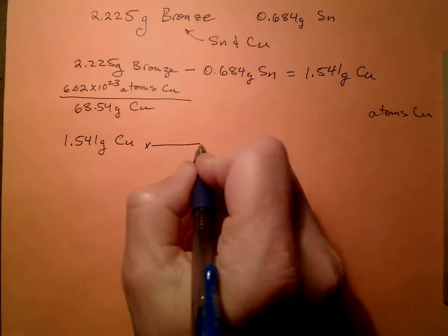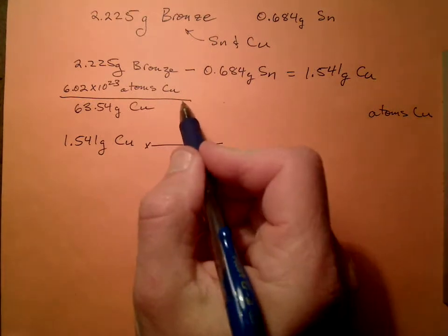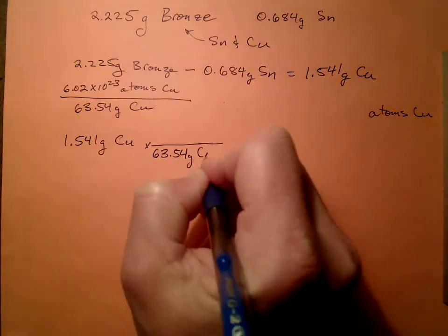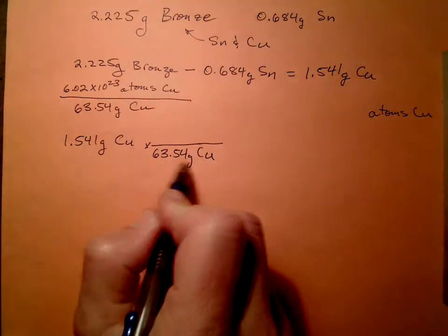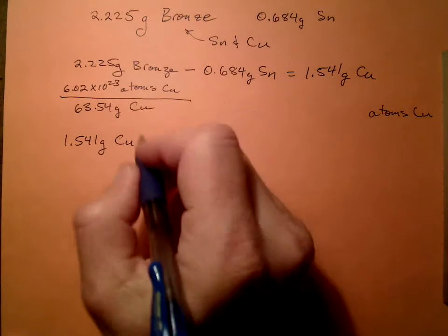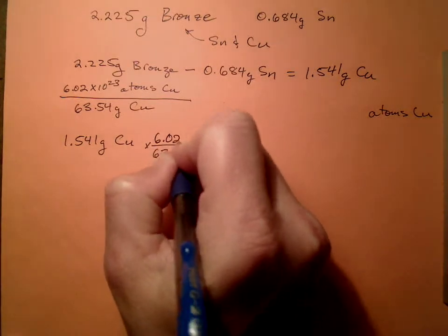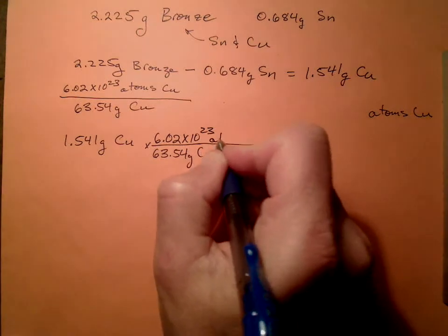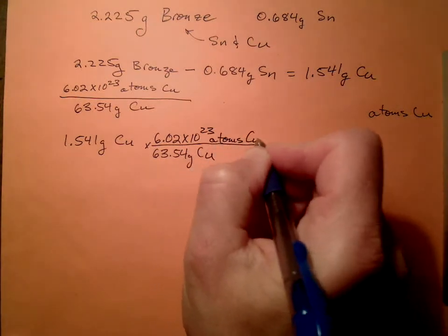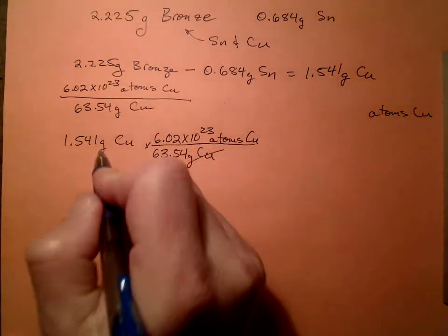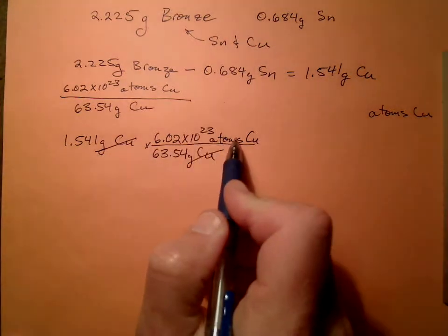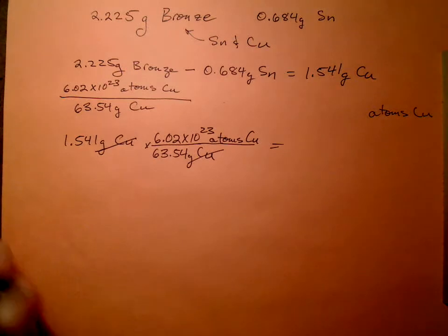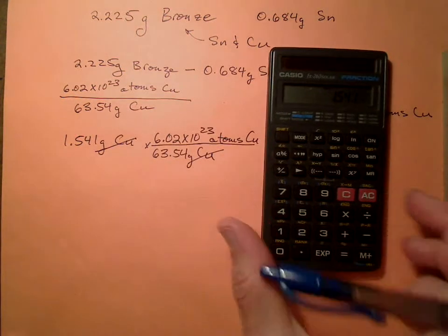And I know for every, I can use this conversion factor now. For every 63.54 grams of copper, I need grams of copper on the bottom so they cancel. I have 6.02 times 10 to the 23rd atoms of copper. Grams of copper cancel. Left with atoms. That's what we're shooting for. So we're in good shape. Let's go ahead and calculate this.